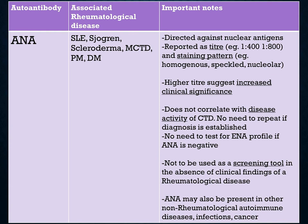Anti-nuclear antibody, or ANA, is associated with rheumatological diseases such as SLE, Sjogren's syndrome, scleroderma, MCTD, polymyositis, and the myositis. It is directed against nuclear antigens. ANA is reported as a titer — either 1:400, 1:800, and so on — and a staining pattern of homogenous, speckle, or nucleolar. A higher titer suggests increased clinical significance.